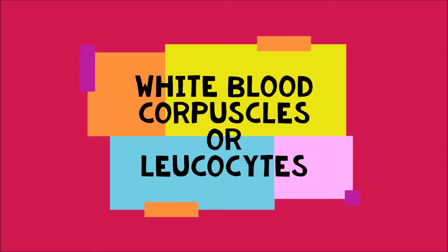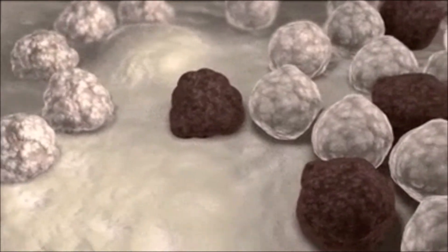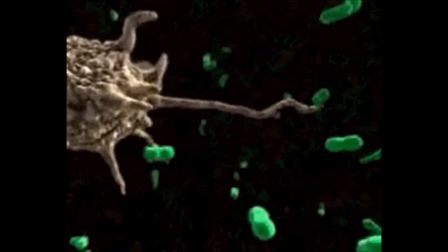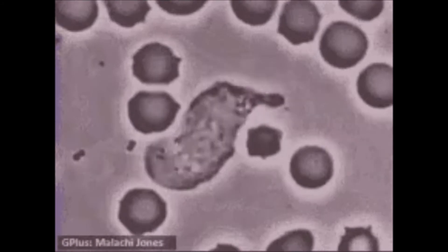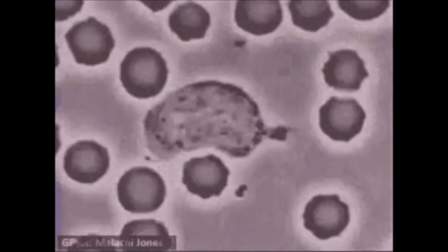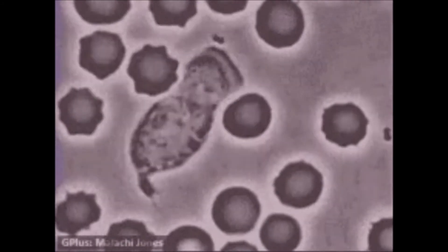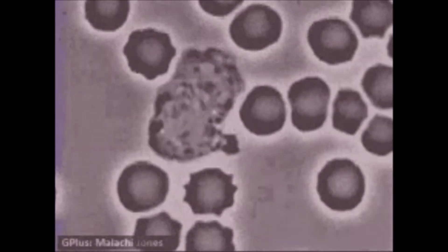White blood corpuscles, also called leukocytes, are colorless, nucleated blood cells which vary in size and shape. A normal human being has around 5,000 to 8,000 leukocytes per millimeter cube of blood. The number increases in the presence of infection. They have a lifespan of 12 hours to 1 day. These cells fight infection, protect us from diseases, exhibit amoeboid movement, and remove dead cells from the body.